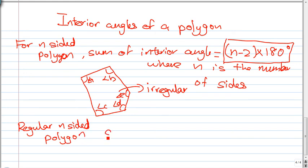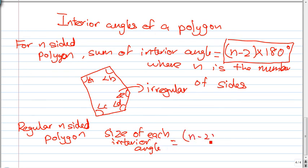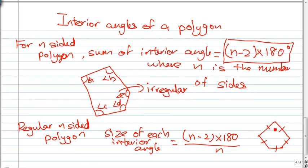For a regular polygon, the size of each interior angle equals (n minus 2) times 180, divided by n. So if you have a regular pentagon with all equal sides, you can find the size of each interior angle using this formula.